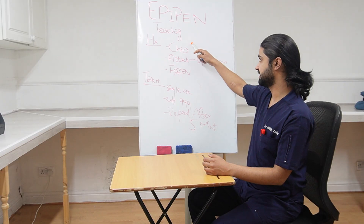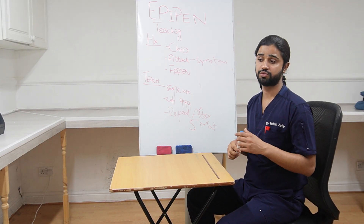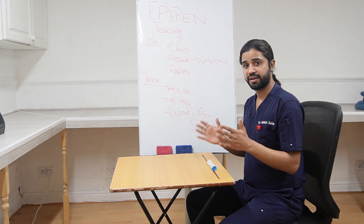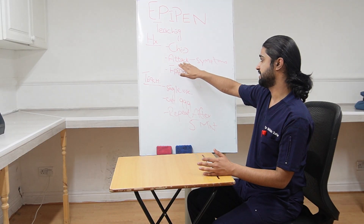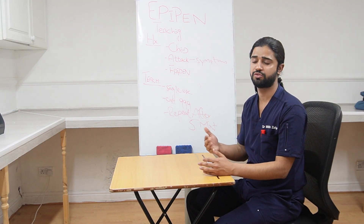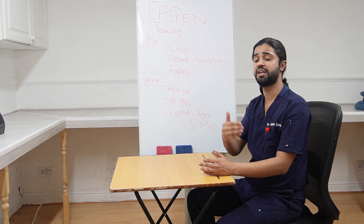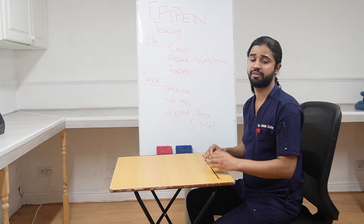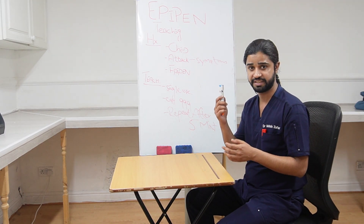After taking this short history, we will start teaching the parent. First, we need to let her know when to use this pen. While asking about the attack, she will tell us the symptoms the child was experiencing — like shortness of breath, lip swelling, tongue swelling, rash, or any beating sensation in the chest. We will rephrase: whenever you notice any of these things, you need to use this pen.